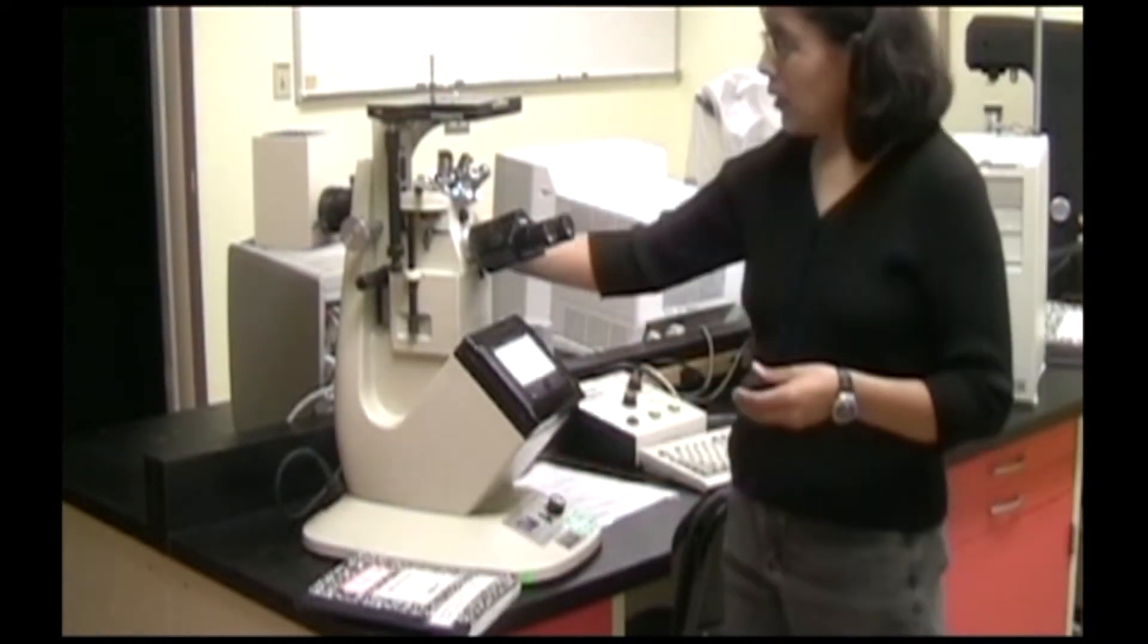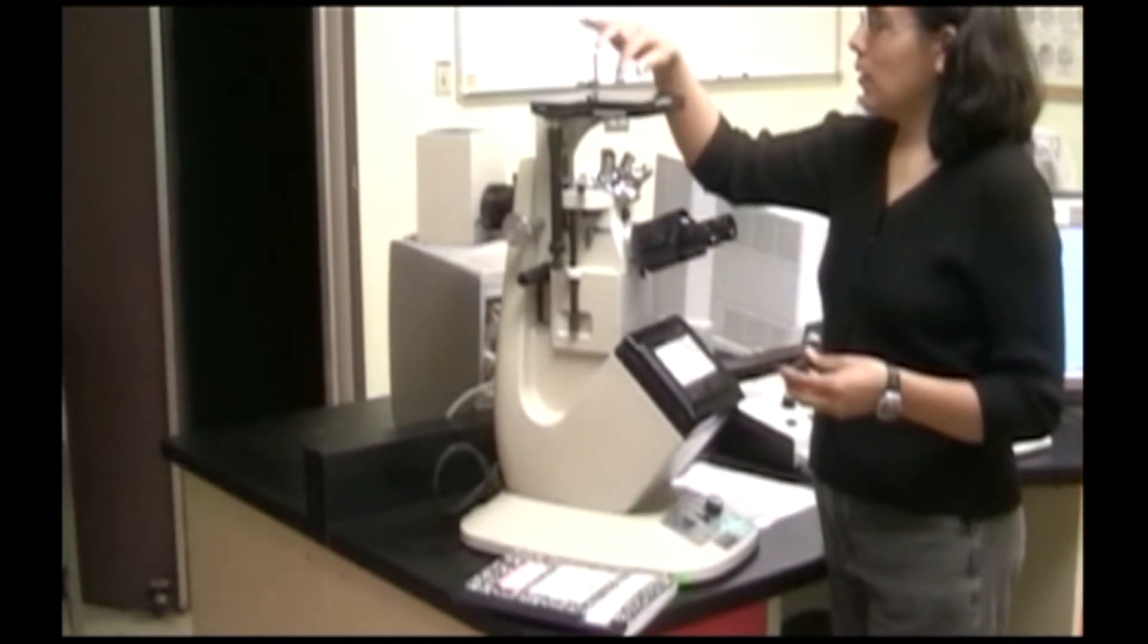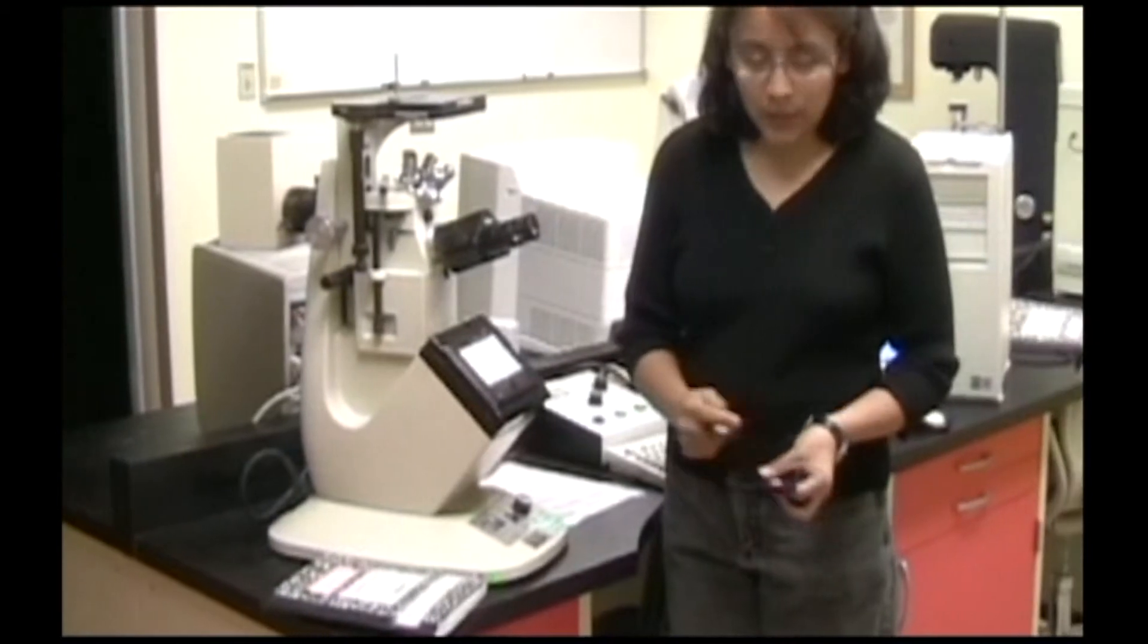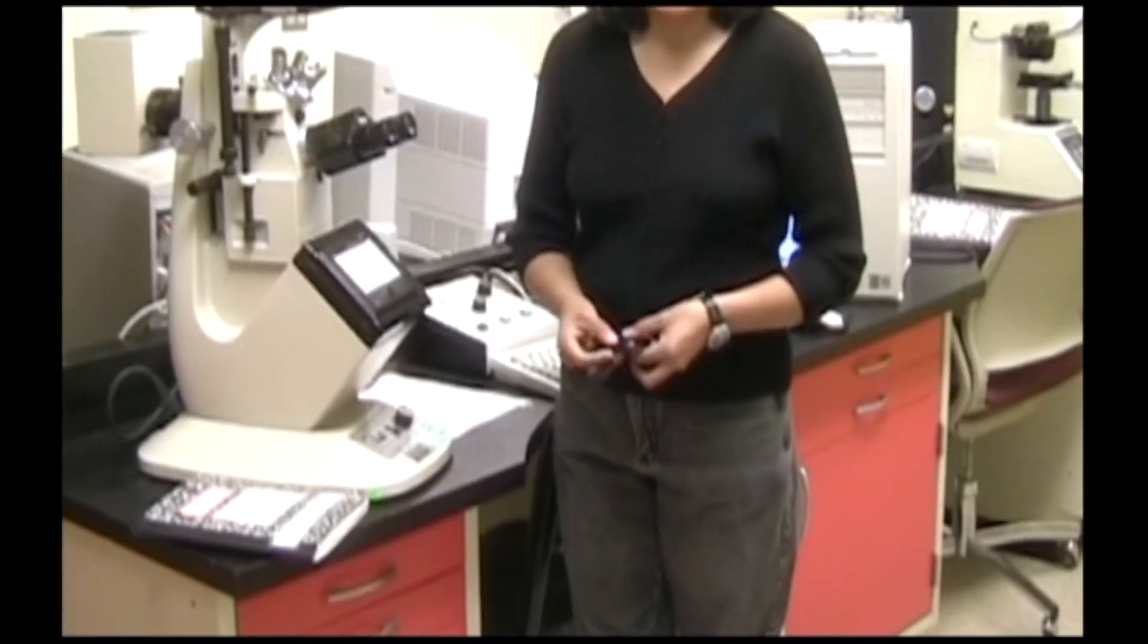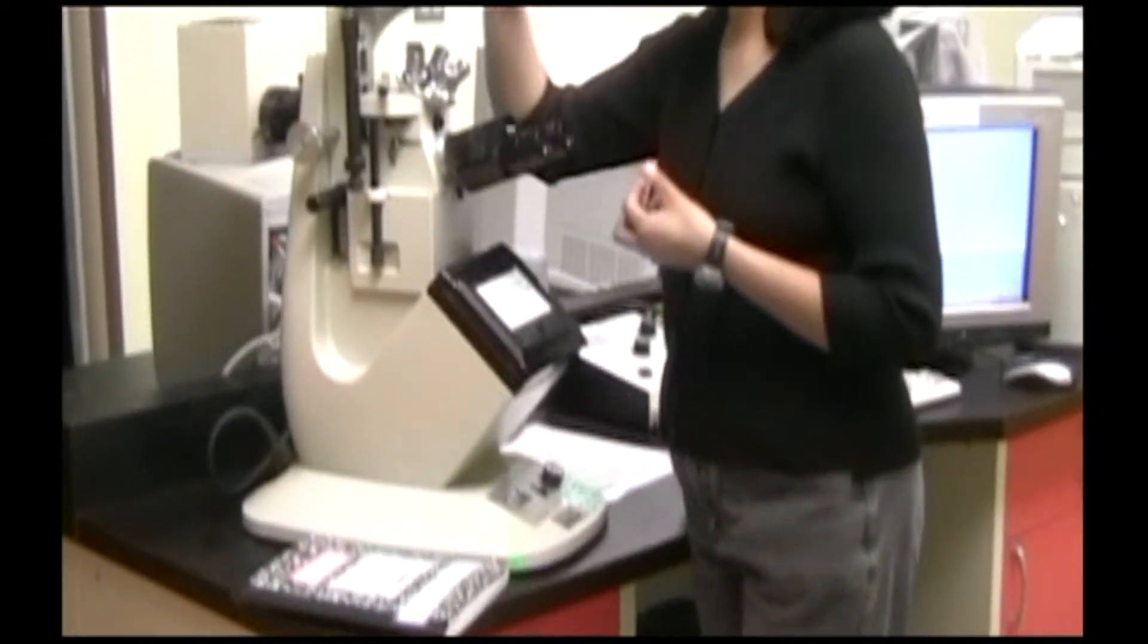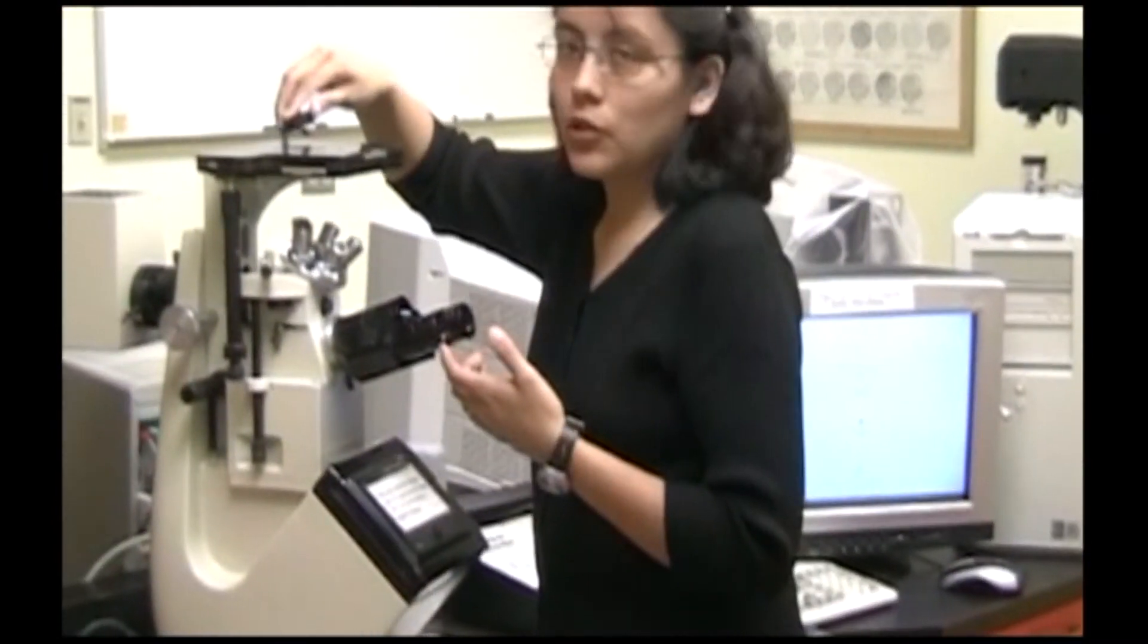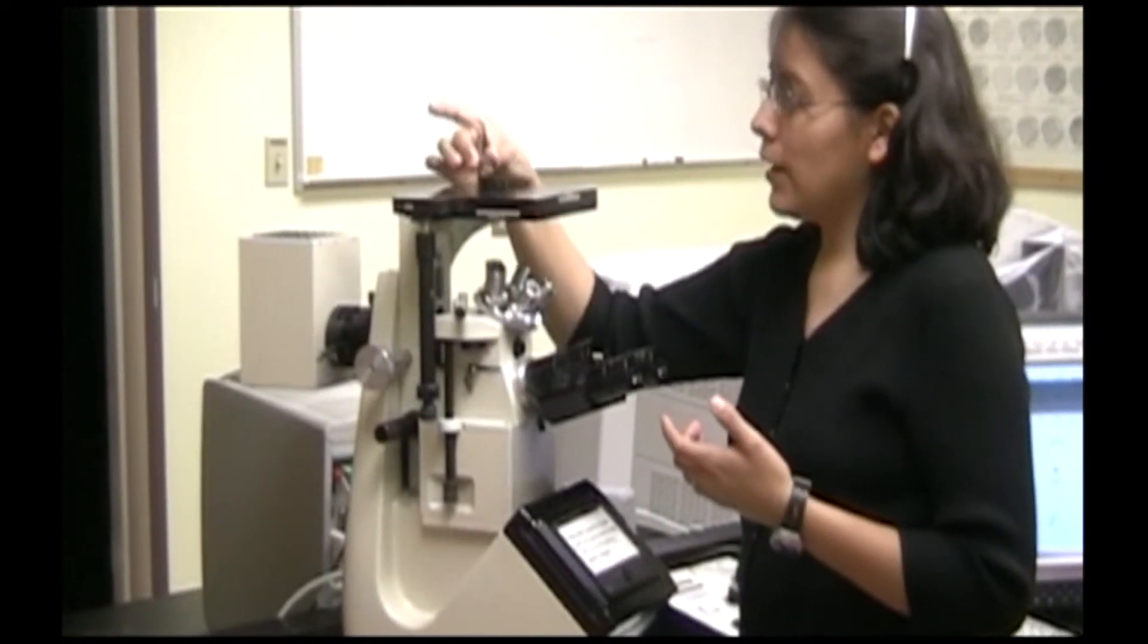Raise the stage all the way up and choose a stage insert with an opening that will show as much of your sample as possible, but not so large that your specimen falls through. You place this concave side down on the stage, and position your sample on top of that and secure it.